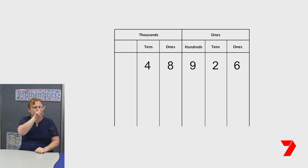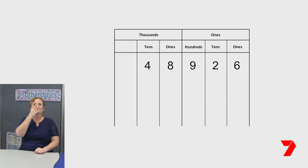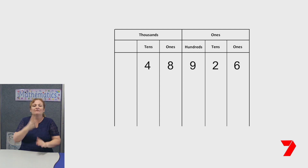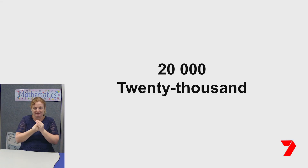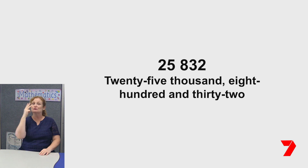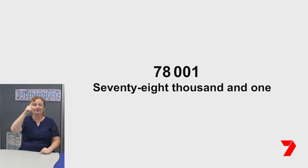When reading a five digit number, such as the one on the place value chart, it is not read as four ten thousands, eight thousands, nine hundreds and two tens and six ones. It is read as forty eight thousand, nine hundred and twenty six. Let's read some numbers aloud together: twenty thousand; twenty five thousand, eight hundred and thirty two; and seventy eight thousand and one.